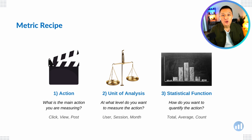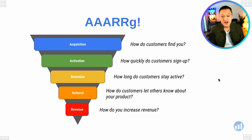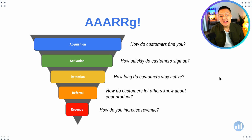There are certain frameworks helpful for defining the KPI of an experiment. One is AARRR, which stands for Acquisition, Activation, Retention, Referral, and Revenue — a funnel-type framework useful in e-commerce. Think about Amazon.com: how do customers find it (acquisition), how quickly do they sign up (activation), how long do they stay active (retention), how do they tell others (referral), and how does Amazon increase revenue? This framework also applies to other apps like Uber Eats.